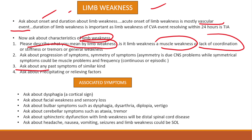Then we will ask about any such event in the past, in the context that it could be multiple sclerosis. Then we will ask about precipitating and relieving factors, which will help us establish what makes the weakness better and what makes it worse, giving us some idea about the underlying cause.